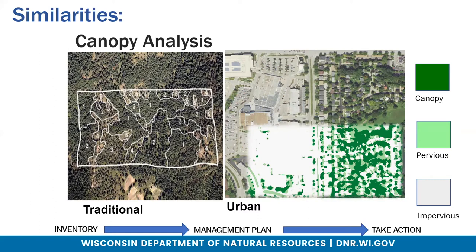Other tools used in both traditional and urban forestry include aerial imagery and overlays to figure out canopy coverage and canopy types — how many acres are in certain tree types — and then ground-truthing it in person. In urban forestry we can do the same thing. This picture is of the Hilldale Mall area in Madison. We get an aerial overlay, digitize it, and programs can tell us where the canopy is versus grass versus cement — pervious versus impervious surfaces. That gives us a better picture of what we have to help us manage.